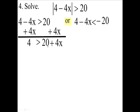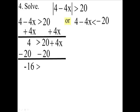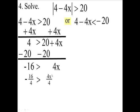Then we're going to solve this for x, so I have to get rid of the 20. We're going to subtract 20 from both sides. So you're going to have negative 16 here — 4 minus 20 is negative 16. The sign stays the same, and you're going to have 4x here. Now you have negative 16 is greater than 4x. So I'm going to divide both sides by the coefficient of the variable, which is 4. Dividing gives us negative 4 is greater than x.